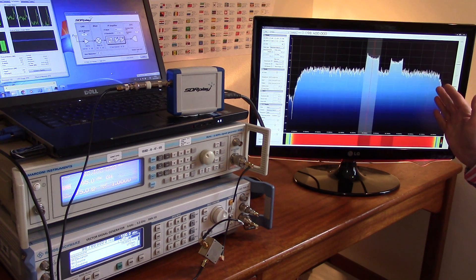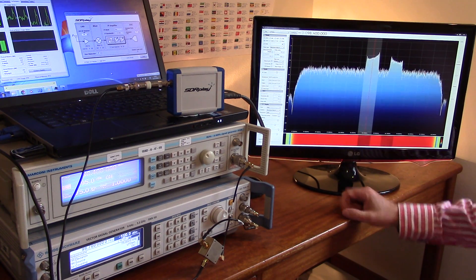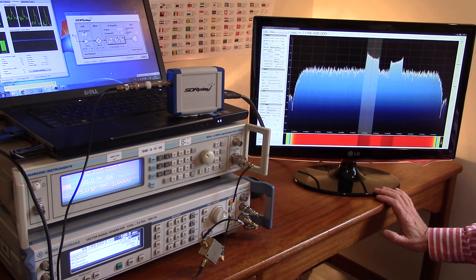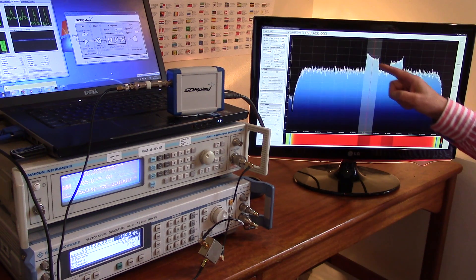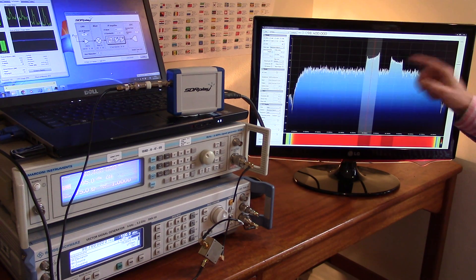Over here you can see we've got the RSP set to a bandwidth of 1.5 megahertz so we're looking at a sizable chunk of spectrum here. Here's our wanted signal and here's our unwanted signal.